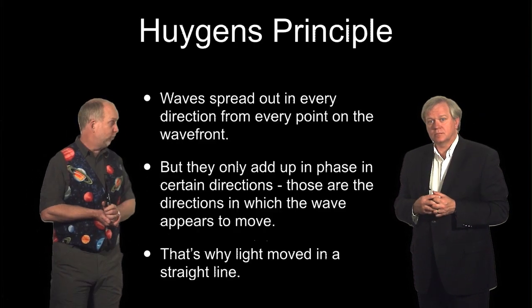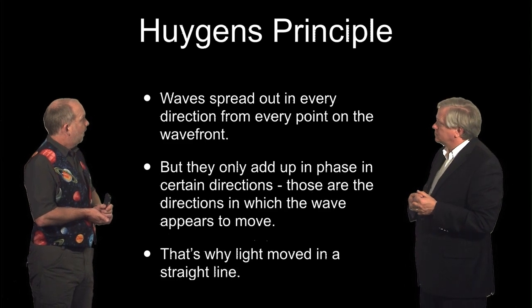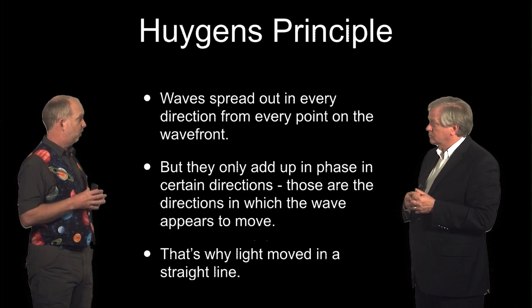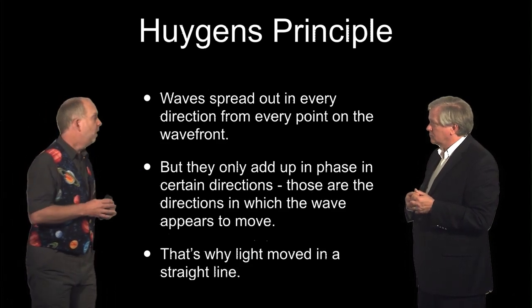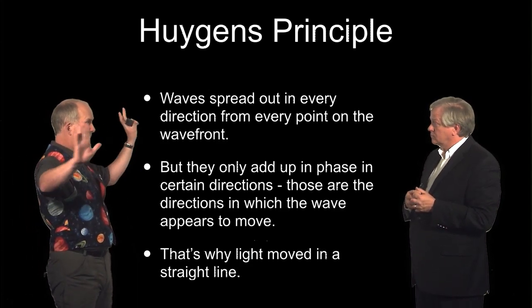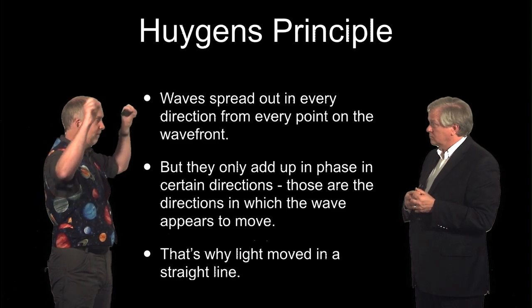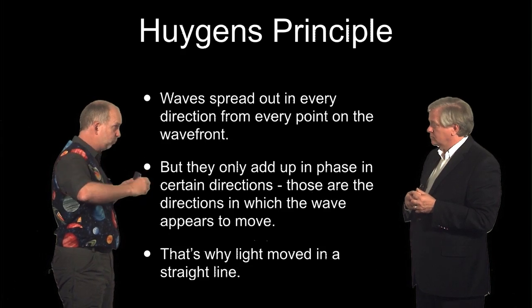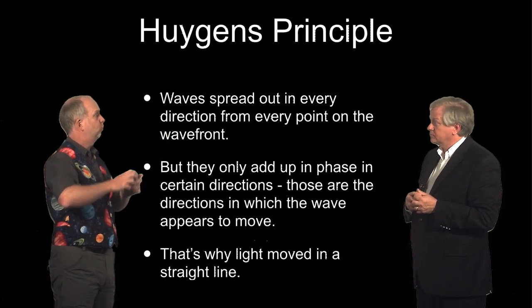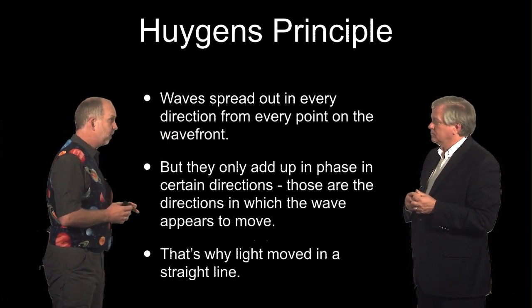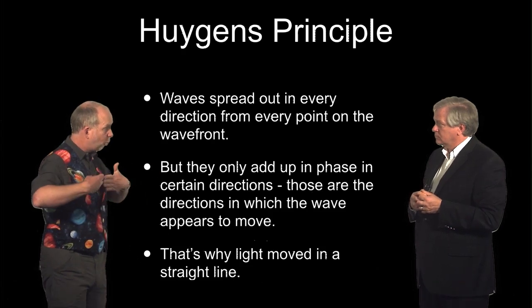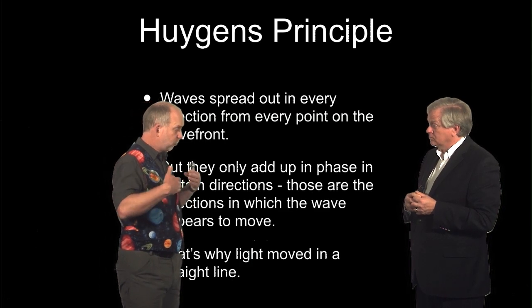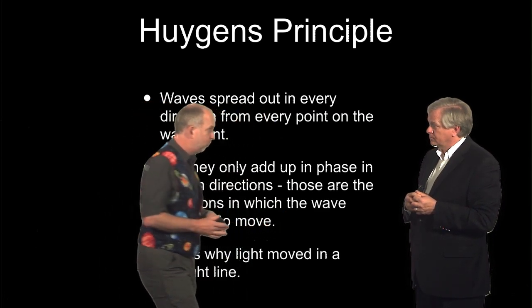And this is called Huygens Principle. Basically the idea is that the waves do not travel in straight lines. They spread out in circles from every location, or spheres in 3D. But it turns out that if you have a plane parallel wave, and you have a sphere coming up from every point on that, the only place all those spheres will add up in phase, where all the peaks line up with the peaks and not cancel with the troughs, is going straight ahead. So that's why light travels in a straight line. And it's because the width of the beam is much bigger than the wavelength. And so the only place it adds up in phase is to go straight forward.